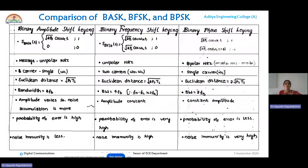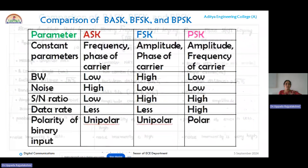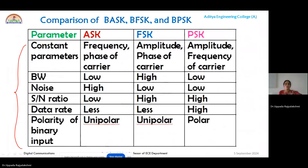Summarizing the constant parameters: in ASK, the amplitude of the carrier is switched between levels while keeping frequency and phase constant. In FSK, the amplitude and phase are constant while only the frequency changes. In PSK, the amplitude and frequency are constant while the phase varies. Regarding input polarity: in ASK and FSK the binary input is unipolar, and in PSK it is bipolar.